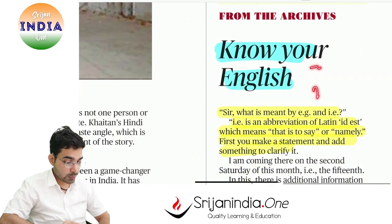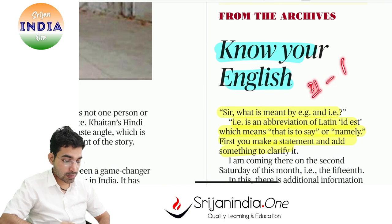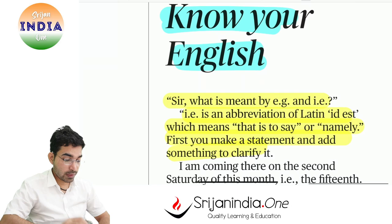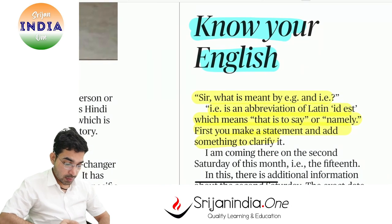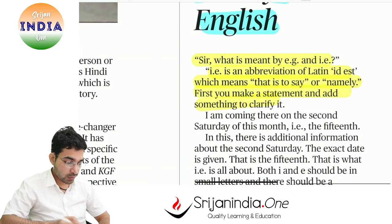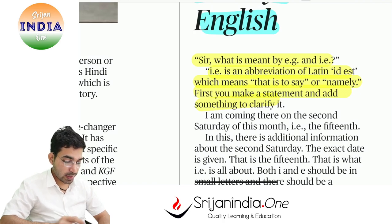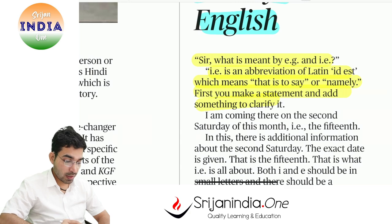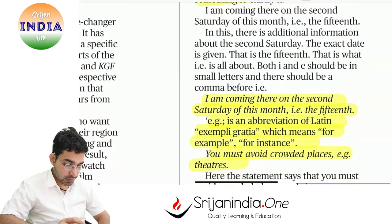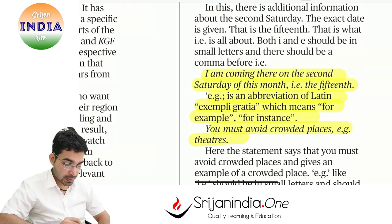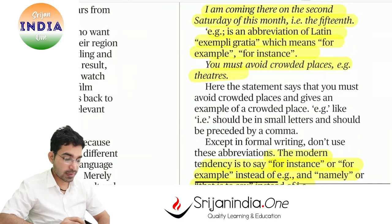Know your English: Article 21 is the right to life with dignity and honor. The difference between e.g. and i.e.: i.e. means 'that is to say' or 'namely' - you state something and give a specific list. e.g. means 'for example' or 'for instance.'